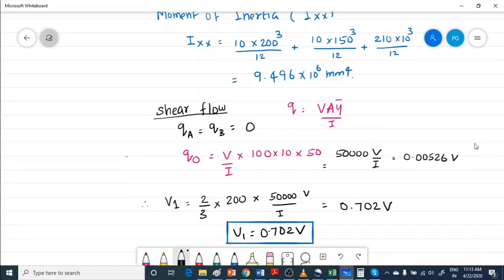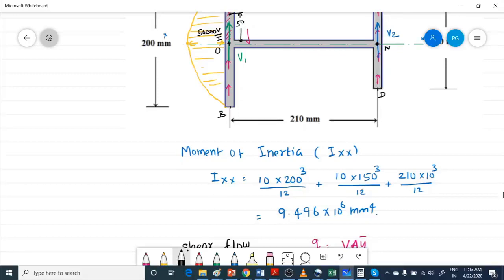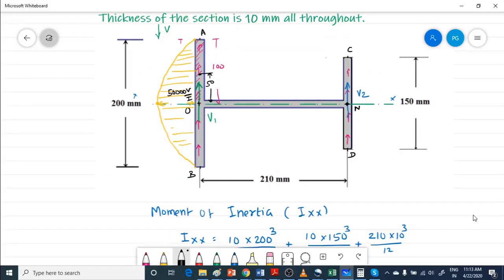This V1 is 0.702 V, and V2 is equal to 0.297 V.